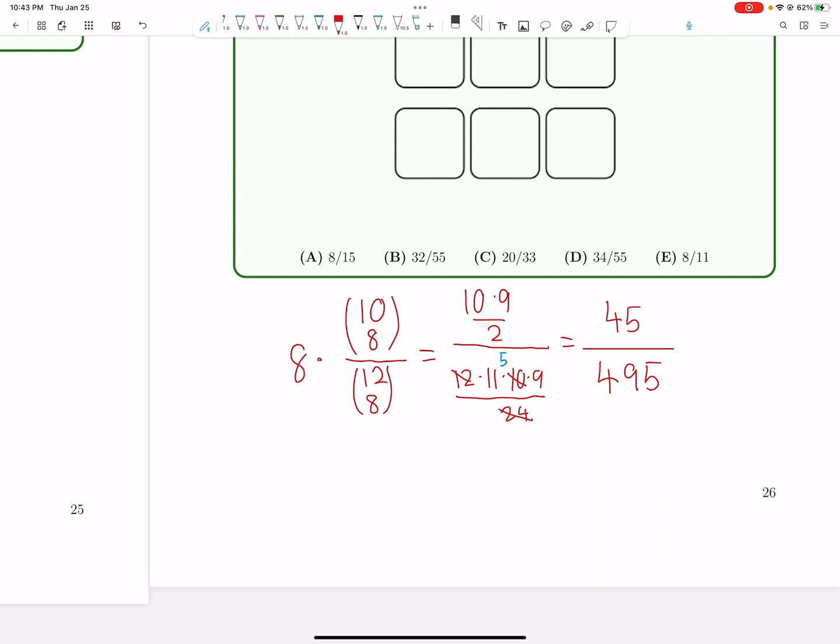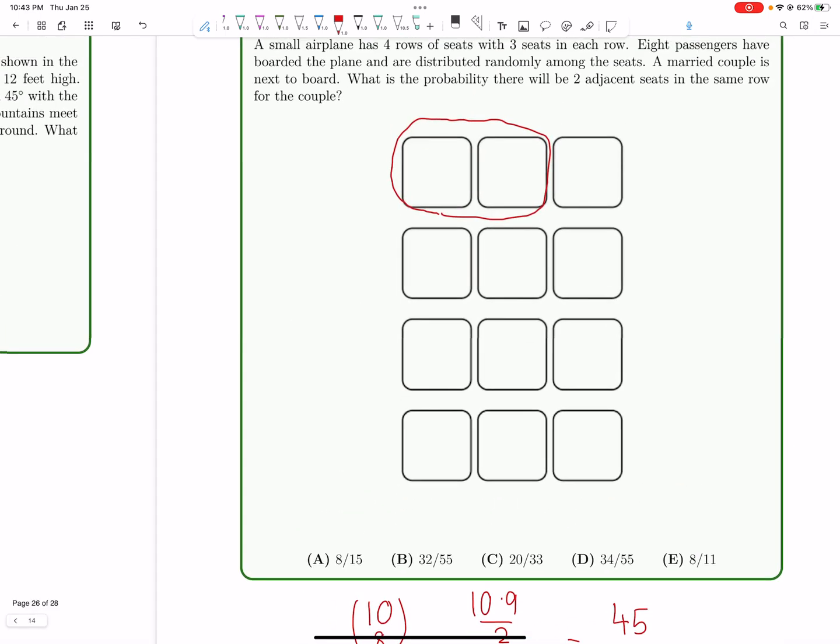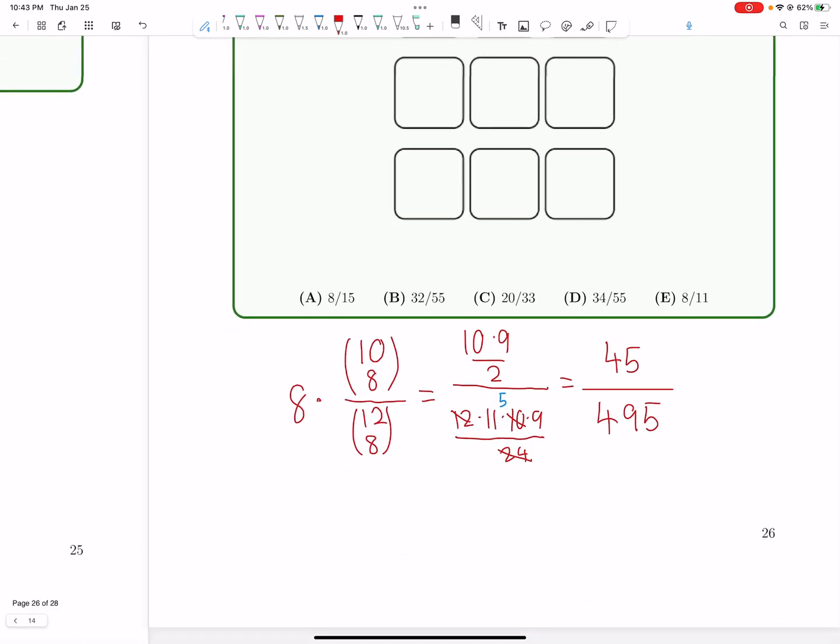Forty-five over four nine five. And that would simplify to one over eleven. Oh, but then we have to, sorry, we also have to multiply by the eight. I forgot about that. So, this would simplify to eight over eleven. And that's where you might be tempted to pick E right away.